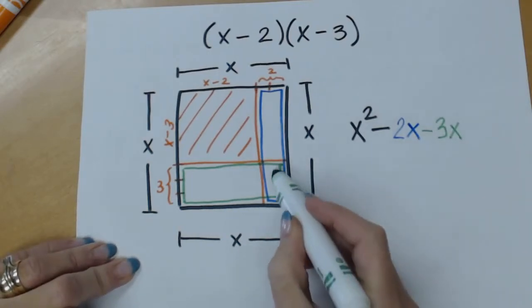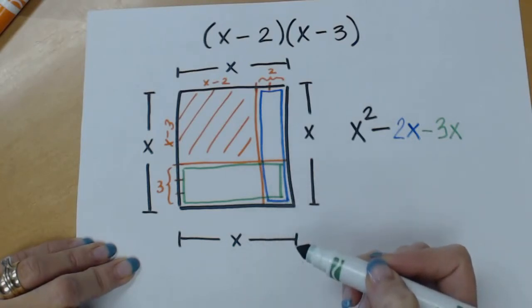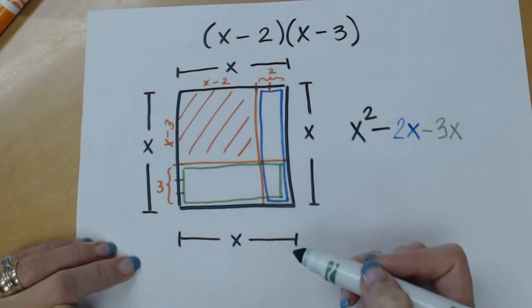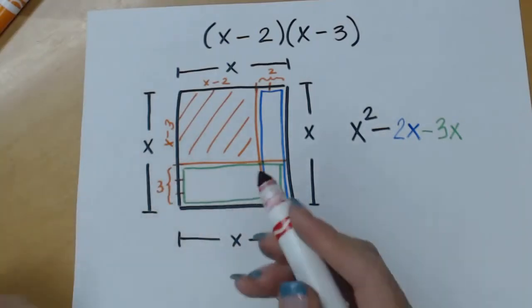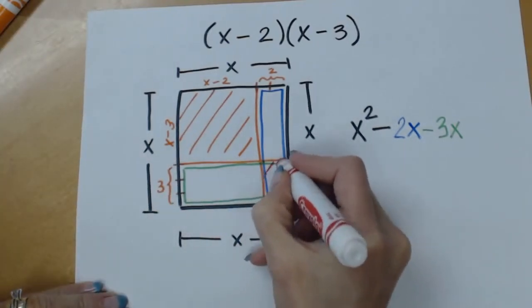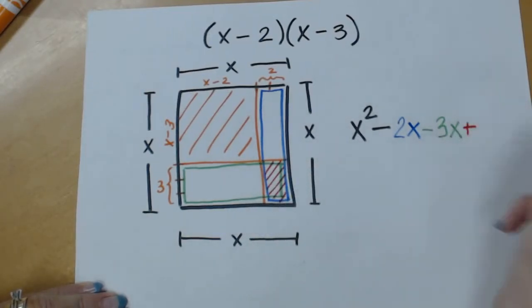But now what ended up happening is I subtracted this portion twice and there was only one of them to take away. So in order to fix that taking it away twice, I need to add the area of this box in to complete it.